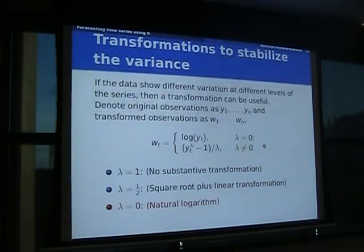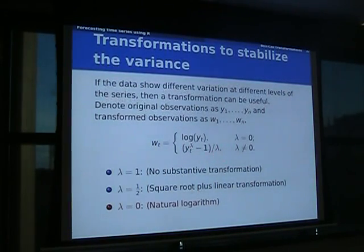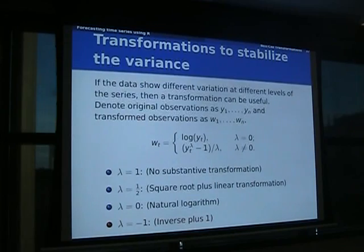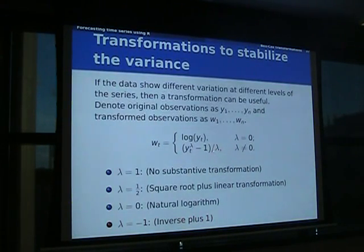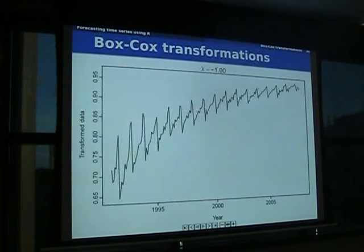The Box-Cox transformation has a parameter lambda. If lambda is zero, you take logs. Otherwise you transform as (y^lambda - 1) / lambda. If lambda is a half, it's just a square root with a linear adjustment; if lambda is one it's basically doing nothing; if lambda is minus one you're inverting y with a small adjustment. The linear adjustment doesn't change the shape — it's there so that everything works smoothly when estimating parameters.